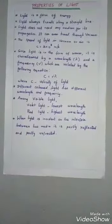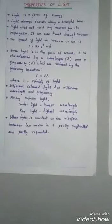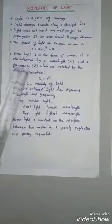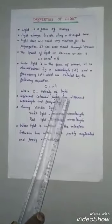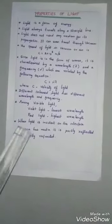Since light is in the form of waves, we can characterize the light by wavelength and frequency. It is related by the relation C equal to nu lambda, where C is the velocity of light, nu is the frequency, and lambda is the wavelength.